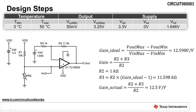The next step is to calculate the ideal non-inverting gain required to produce an output voltage from 50 millivolts to 3.25 volts, given the input voltage range calculated on the previous slide. The non-inverting gain is calculated by dividing the output voltage swing by the input voltage swing, giving a value of 12.598 volts per volt. The non-inverting gain is set by resistors R2 and R3, calculated with the equation: gain equals R2 plus R3 divided by R2. Choosing a standard resistor value of 1 kiloohm for R2 allows us to calculate a resistor value of 11.598 kiloohms for R3. Since 11.598 kiloohms is not a standard resistor value, we will use the next closest value of 11.5 kiloohms, as shown in the schematic.